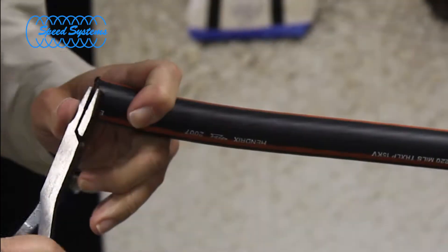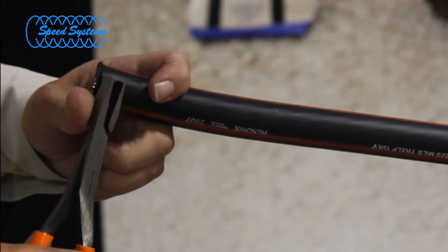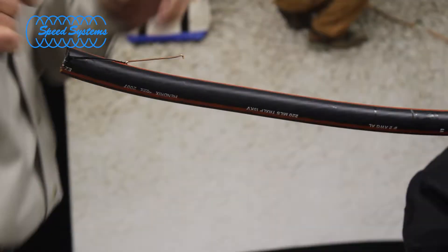Use pliers such as the Speed Systems SC-13 to pull a neutral wire back approximately 1 to 1½ inch.